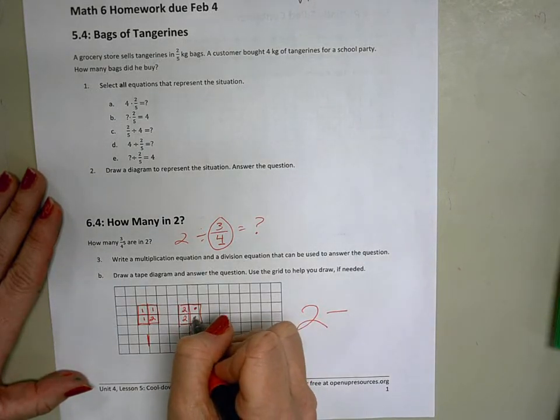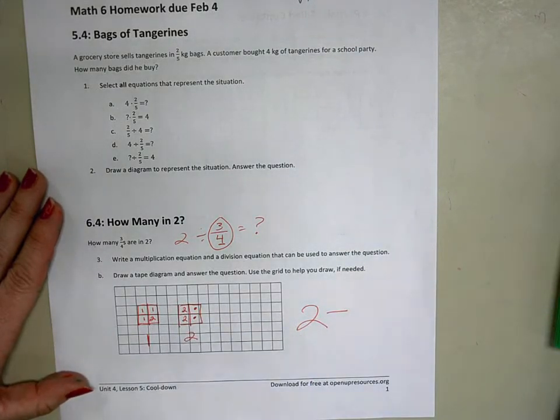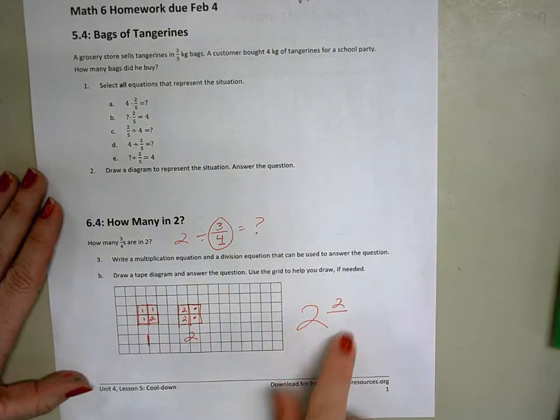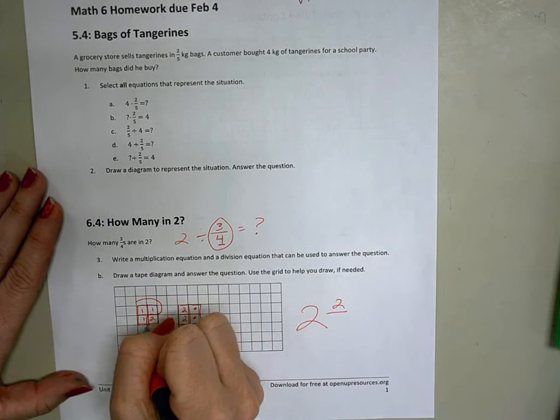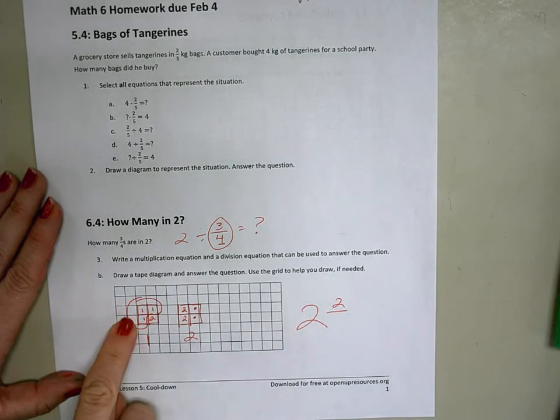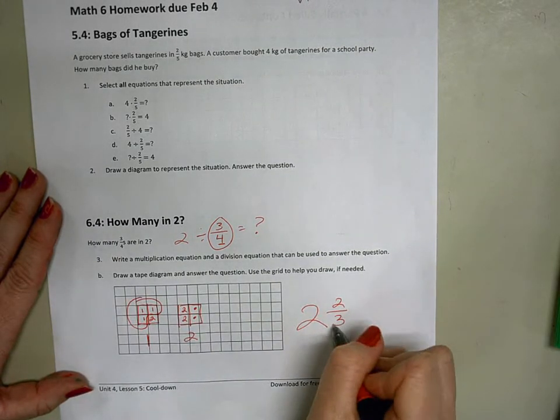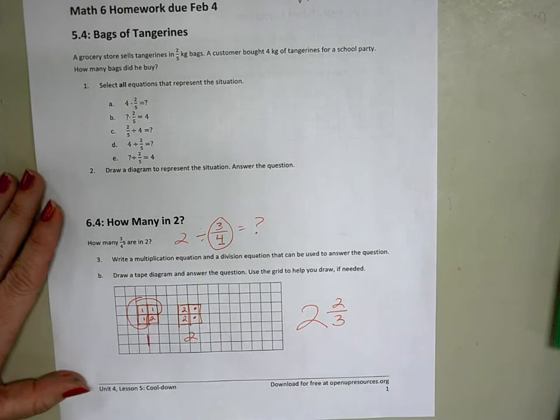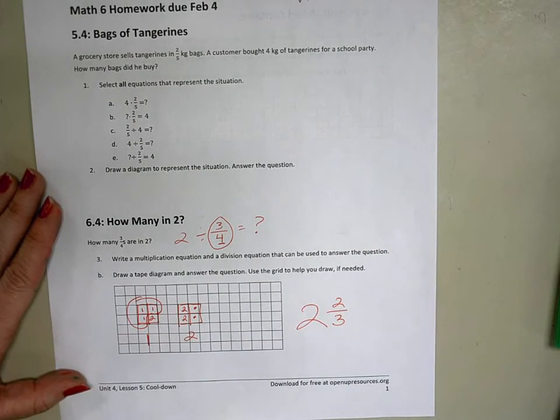I have 2 left over. My leftovers are my numerator. My denominator is how much is in each group. And in each group we have 3. So the answer is 2 and 2 thirds.